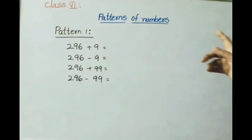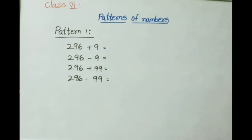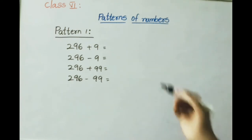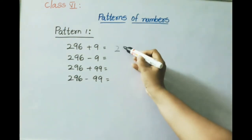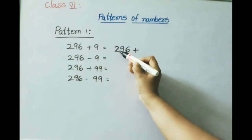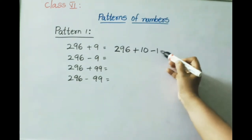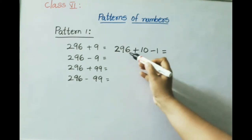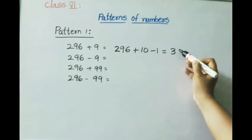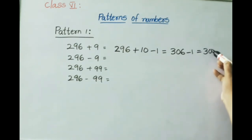Let us see patterns of numbers. First pattern: 296 plus 9. We write 9 as 10 minus 1. So 296 plus 10 equals 306, minus 1 gives 305. The answer is 305.